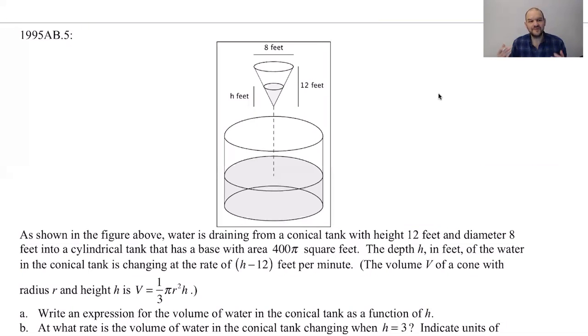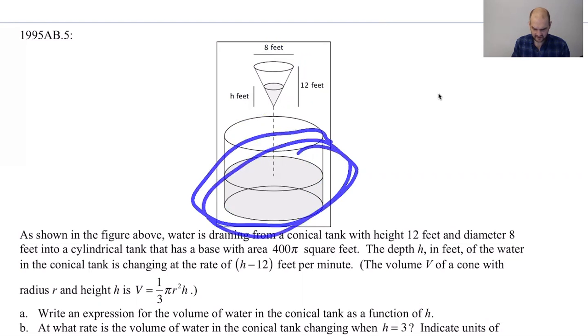Okay, in this video we're going to try to do 1995 AB5, which is a related rates problem. It's kind of old, but it's an interesting problem because we have one thing and something's happening there, but then this tank is leaking into this tank. So the rate of change of the volume in this tank is definitely related to the rate of change of volume in this tank. So let's see if we can solve it.